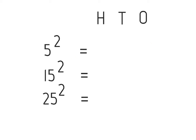Let us first see some squares. So 5 square is 25. 15 square is 225. 25 square is 625.